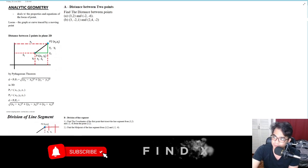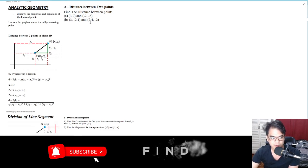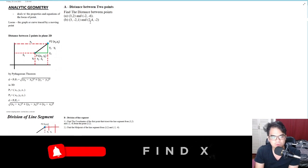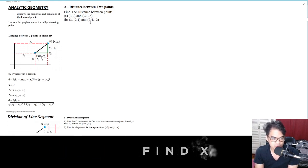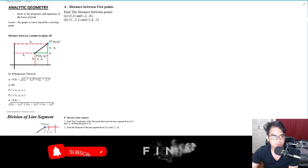The first topic is the most basic formula for analytic geometry: the distance between two points in plane 2D. This is also known as the distance formula. Analytic geometry deals with the properties and equations of the locus of a point. Locus means the graph or curve traced by a moving point.